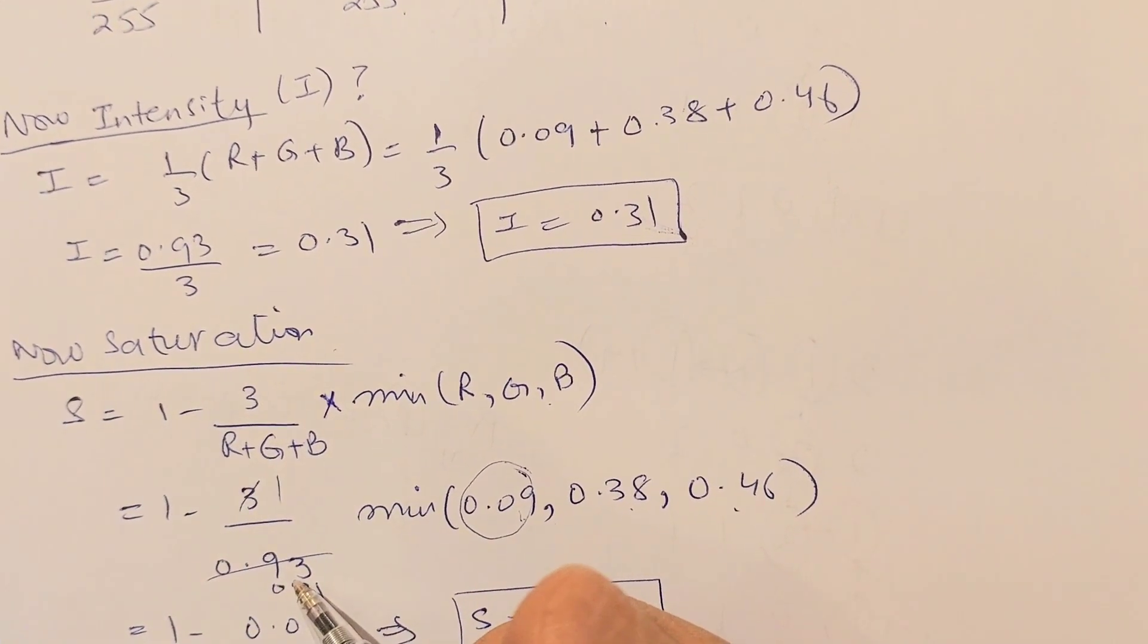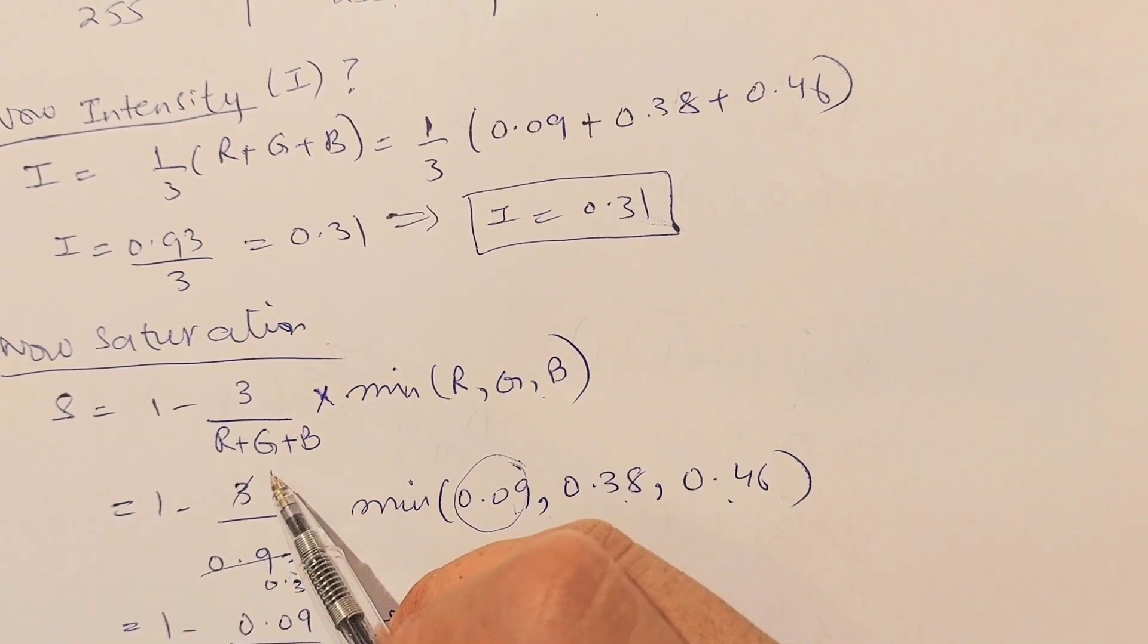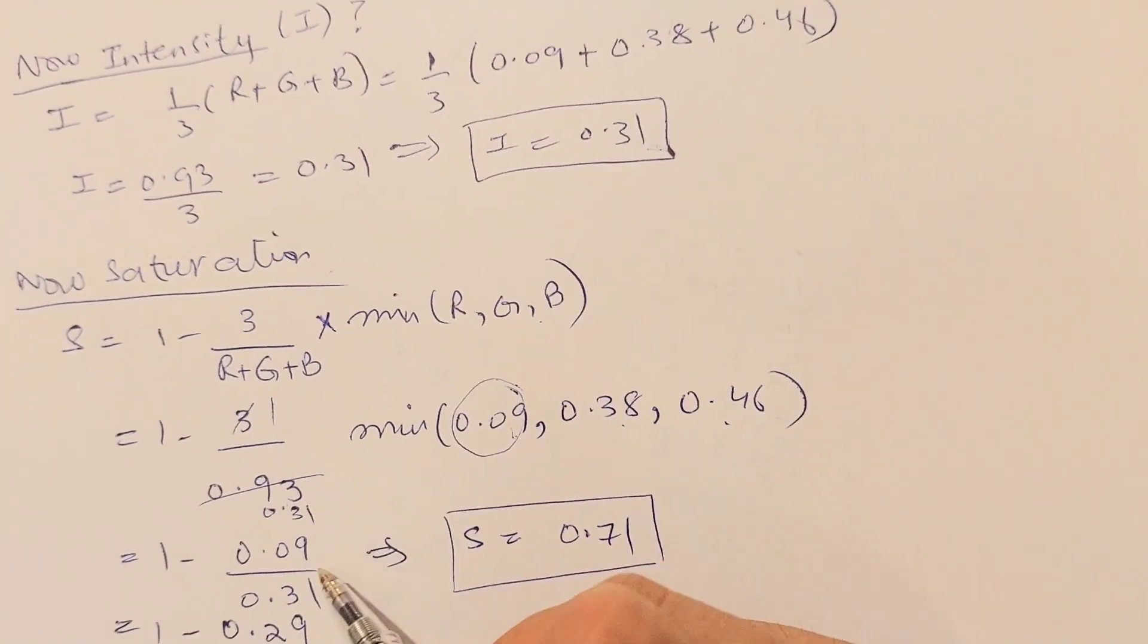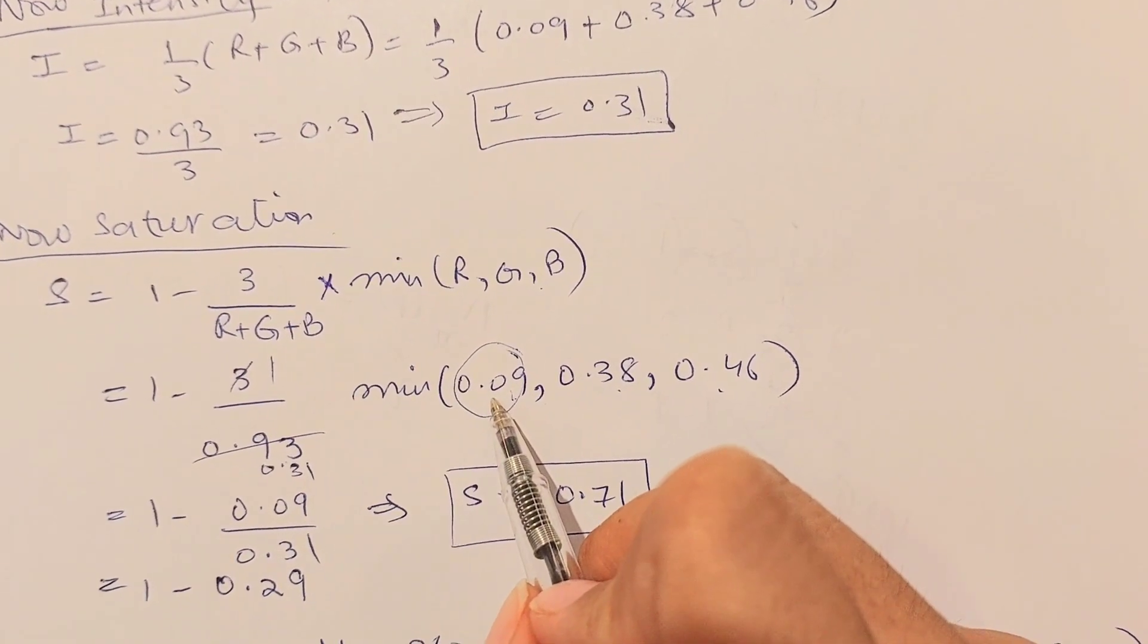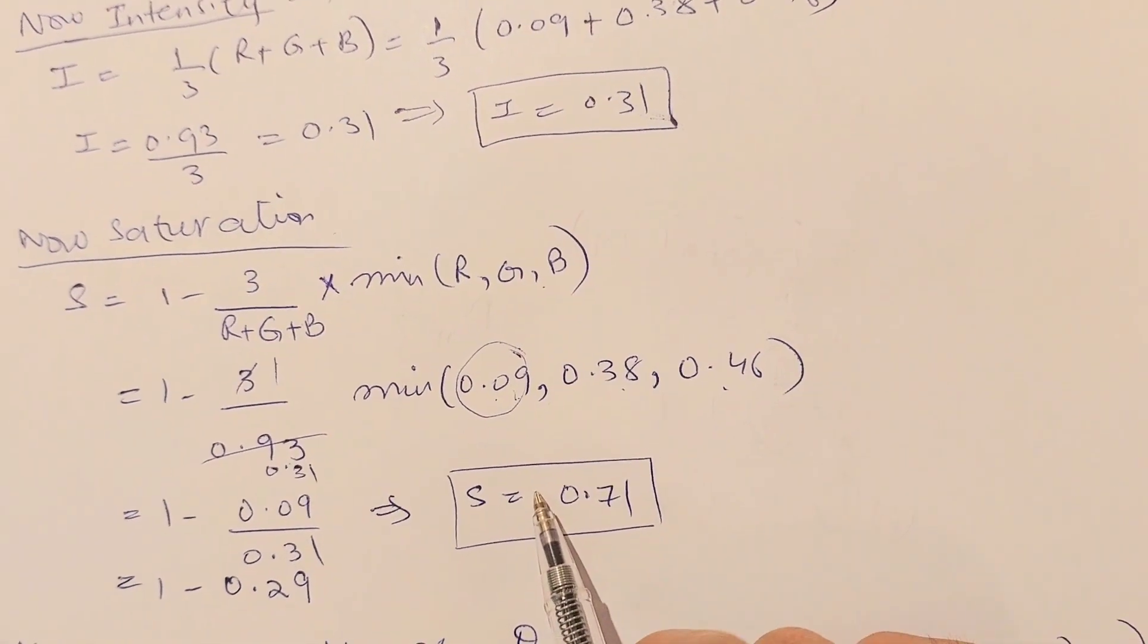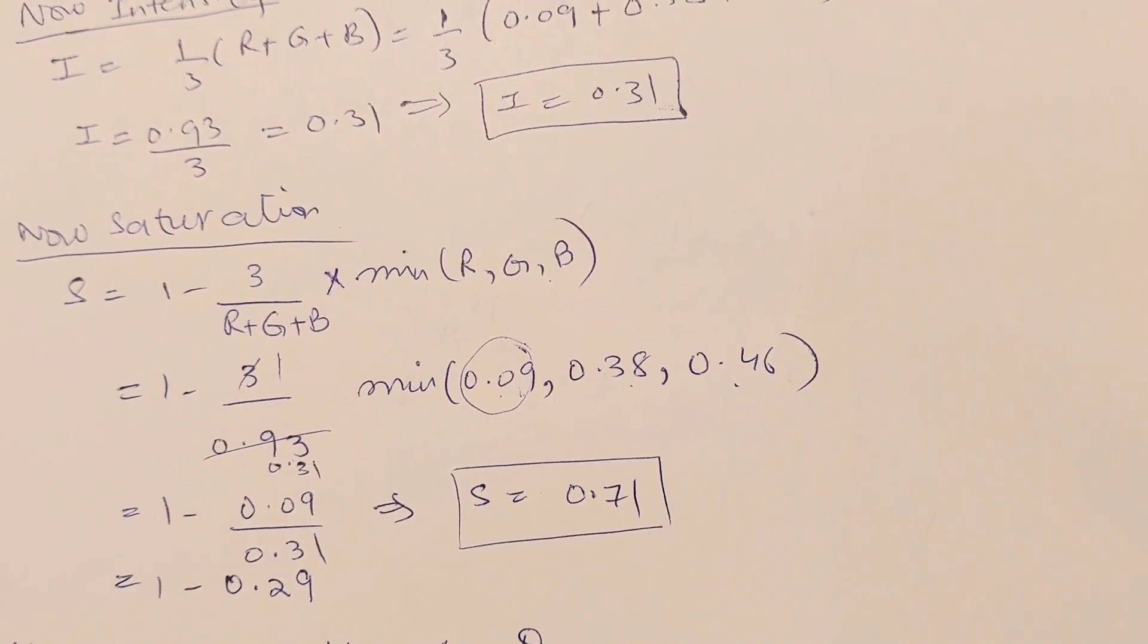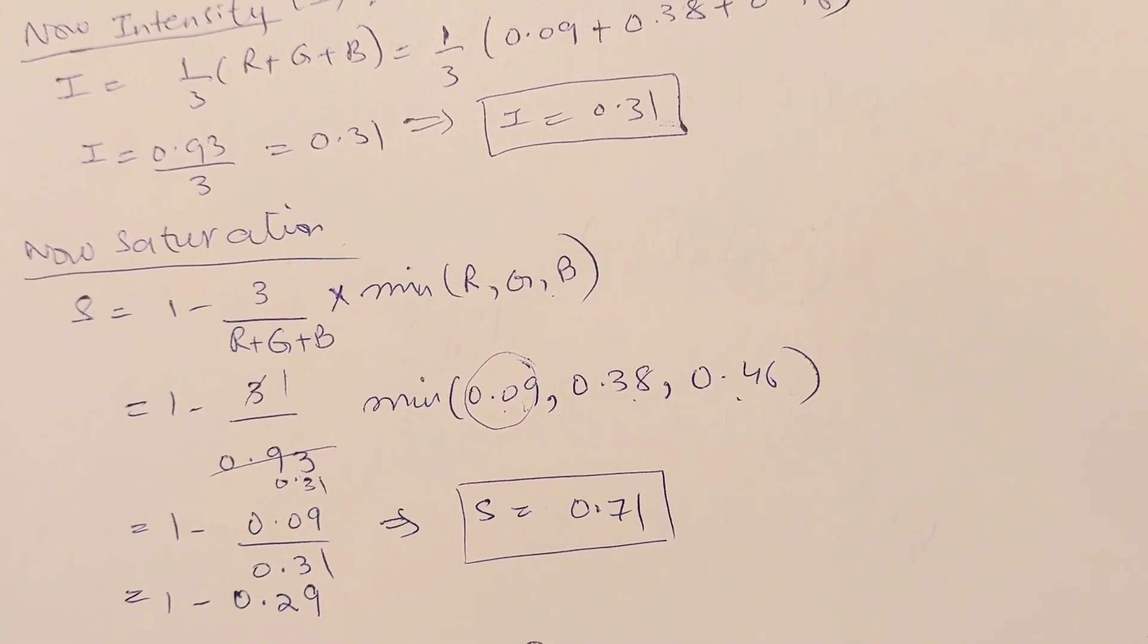Out of these, we know that this one is minimum, so I will simply take this value out. Here I have added R, G, and B, and the sum was 0.93. I divided 0.93 by 3, so I got 0.31. 0.31 came in the denominator and 0.09 is in the numerator. After calculating this, the value of saturation is coming out to be 0.71.